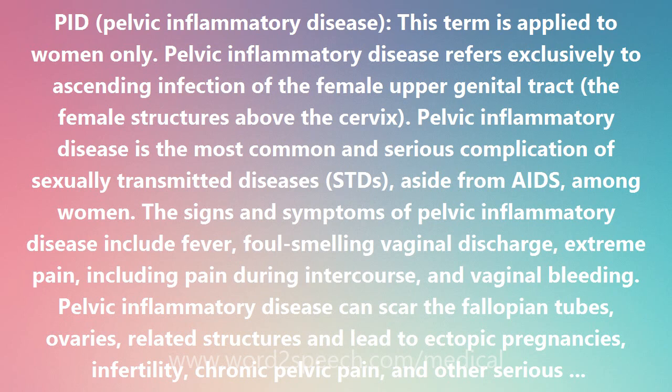Pelvic Inflammatory Disease can scar the fallopian tubes, ovaries, and related structures, and lead to ectopic pregnancies, infertility, and chronic pelvic pain.